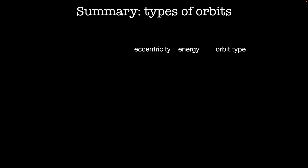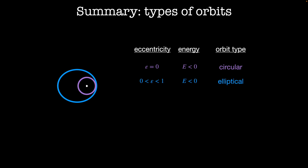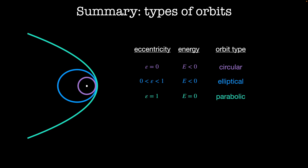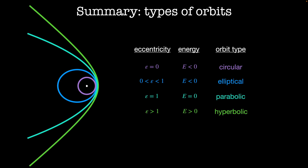To summarize: when eccentricity equals 0, the energy is less than zero and the orbit is circular. When eccentricity ranges between 0 and 1, the orbit is elliptical with negative energy. When eccentricity equals 1, energy is exactly zero and the orbit is parabolic. When eccentricity is greater than 1, the energy is positive and we have a hyperbolic orbit. In the next video, we'll look at what happens when you inject energy into an orbit — for example, if you're a rocket and you want to change orbits. Thanks for watching, and I'll see you next time.